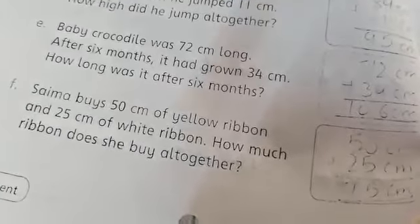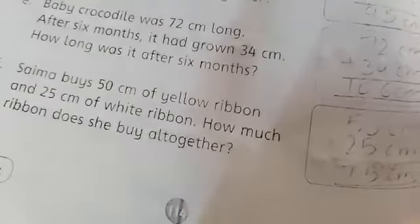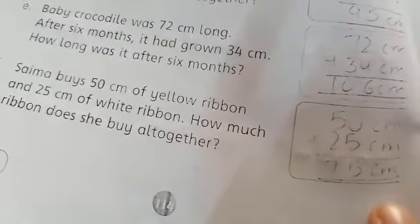Saima buys 50 centimeter of yellow ribbon and 25 centimeter of white ribbon. How much ribbon does he buy all together?